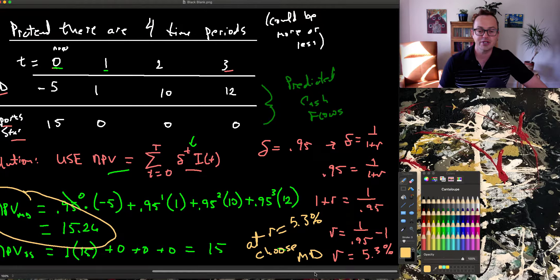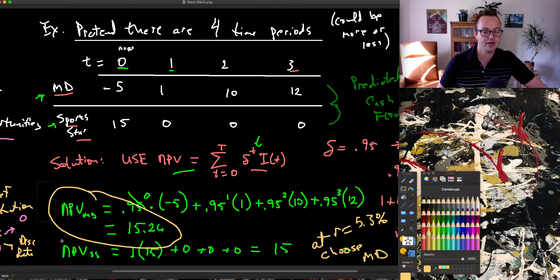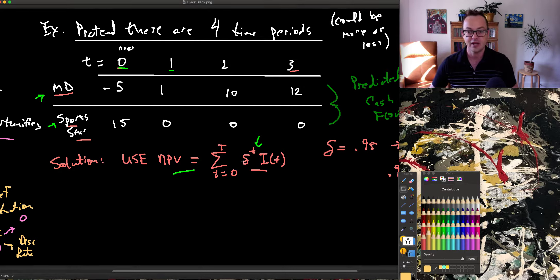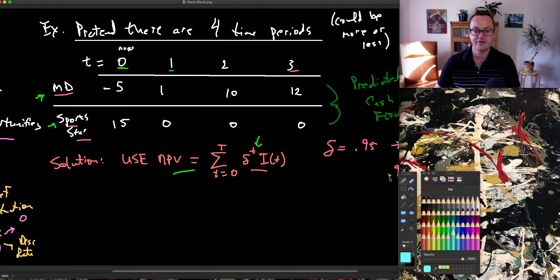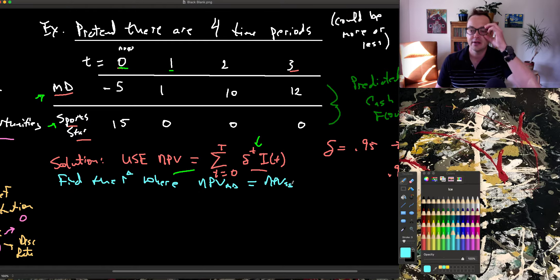Now the final thing that we want to look at here, at 5.3, we're pretty close to equal here. I want to do one last calculation, and I want to find the rate R star where the NPV of being a medical doctor is equal to the NPV of being a sports star.